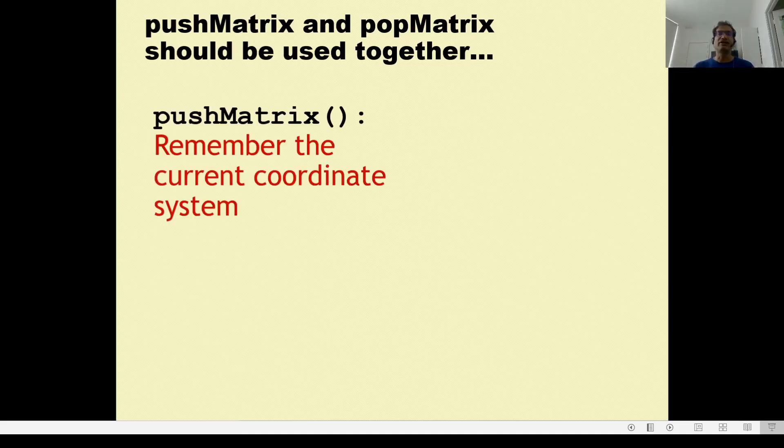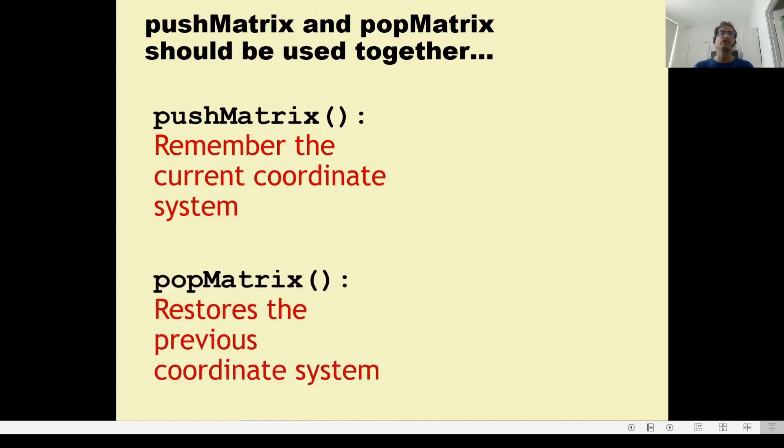Push matrix is a way of telling processing that you want to remember the current coordinate system. I'm already in a coordinate system, but I'm planning to change it now. So please remember this place, please remember where I am because I'm going to come back to it. And to come back to it, we will use pop matrix. Pop matrix is I'm done with using whatever new coordinate system that I want to use and you please restore the previous one.